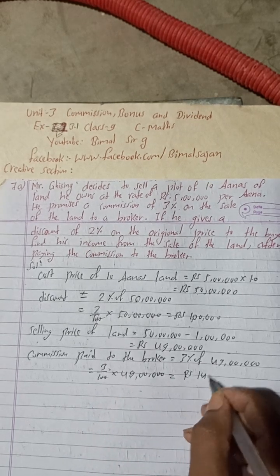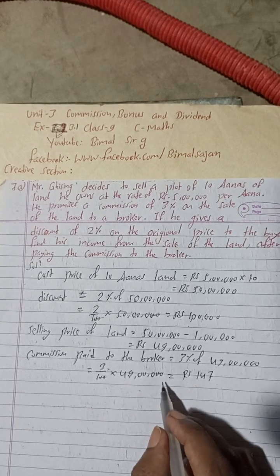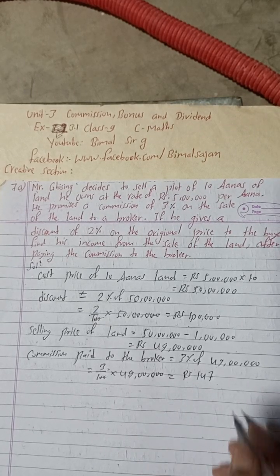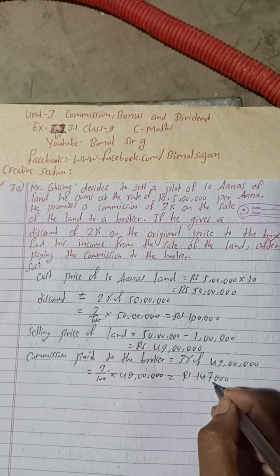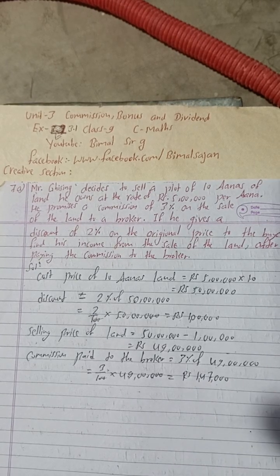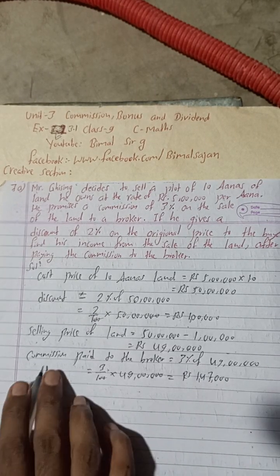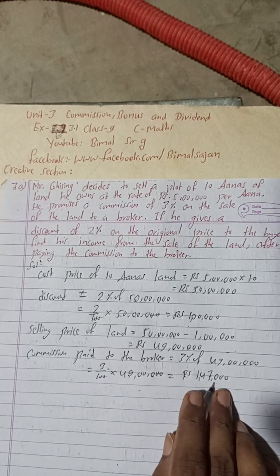And there is how many zeros are there? 1, 2, 3 zero, 1, 2, 3 zero. So this is here 147,000. The commission, okay, commission for the broker is 147,000.